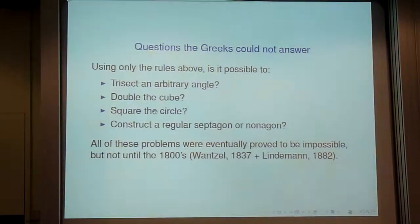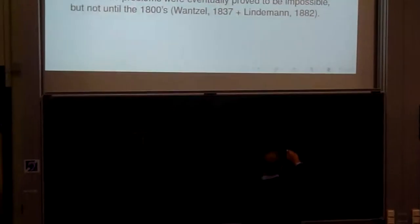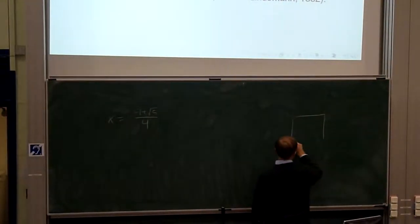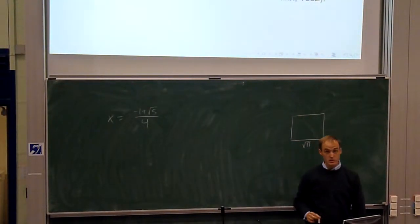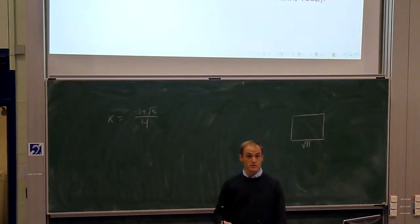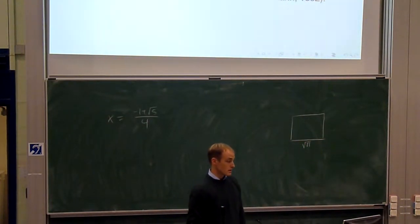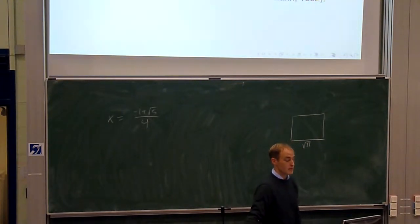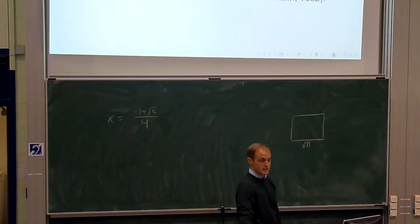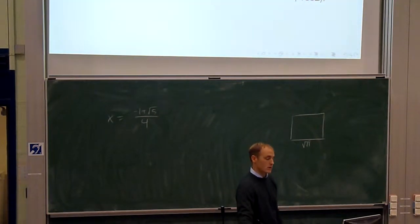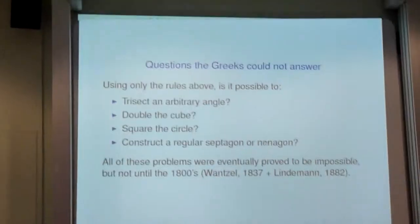Is it possible to square the circle — find a square whose area equals the area of a circle with radius 1? That's the same as asking whether √π is constructible using straight edge and compass. They also asked whether you can construct a regular septagon (seven-sided polygon) or a regular nonagon (nine-sided polygon), and more generally, which regular polygons can be constructed.